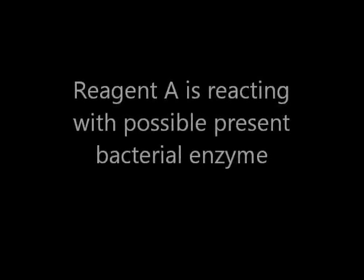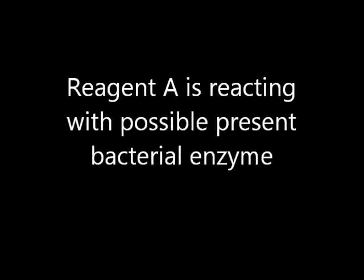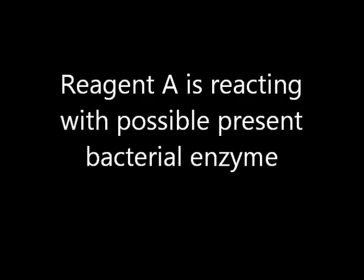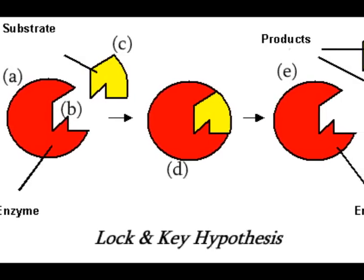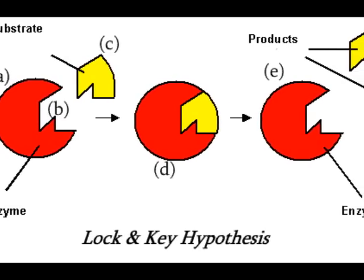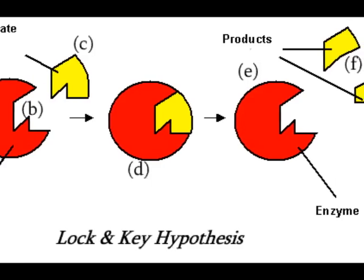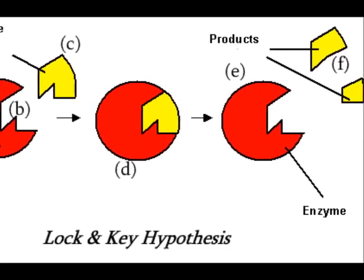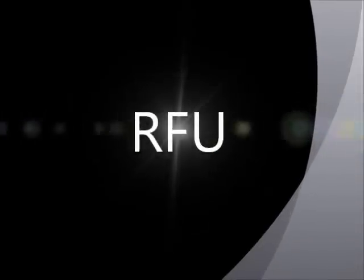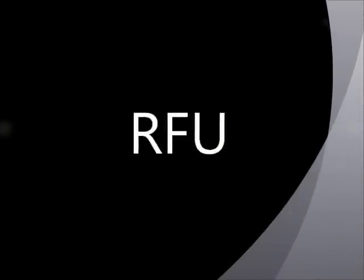During this time, Reagent A will be reacting with the bacterial enzyme if present in the sample. If the bacteria and its enzyme are present in the sample, then the substrate contained in Reagent A solution will couple with the enzyme and a fluorescent tag is broken off from the substrate molecule. This fluorescent tag will be detected by the fluorometer and measured in RFU or relative fluorescent units.